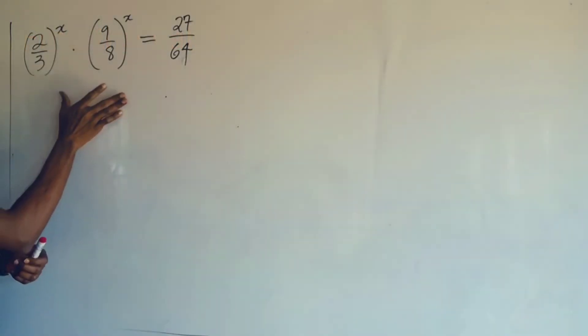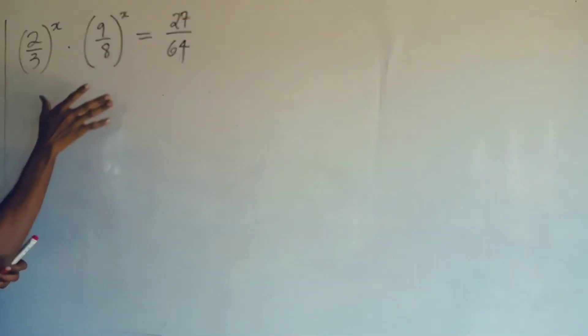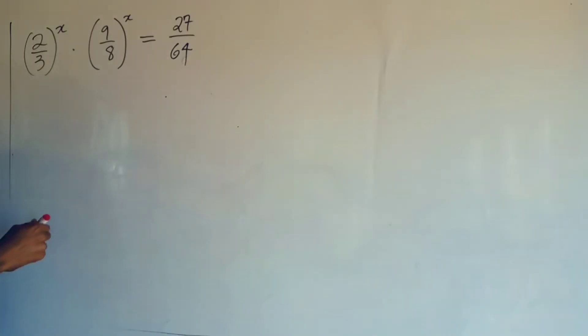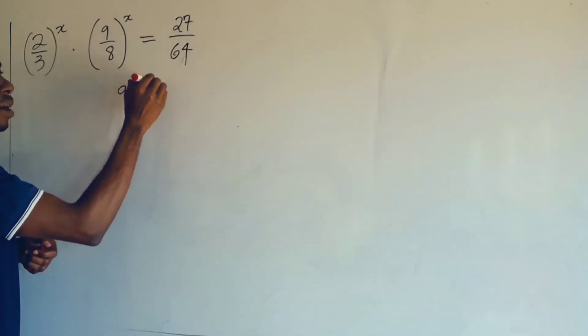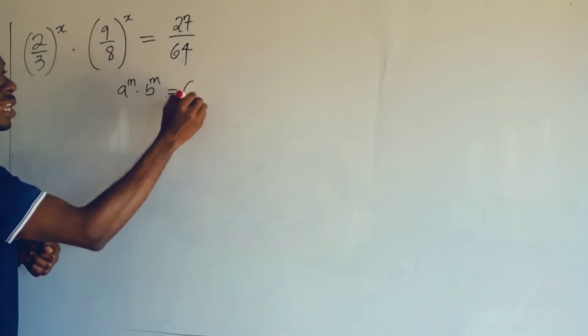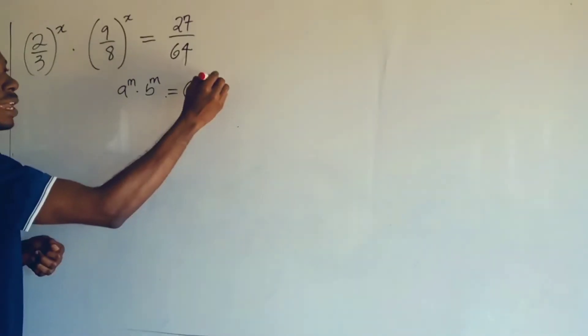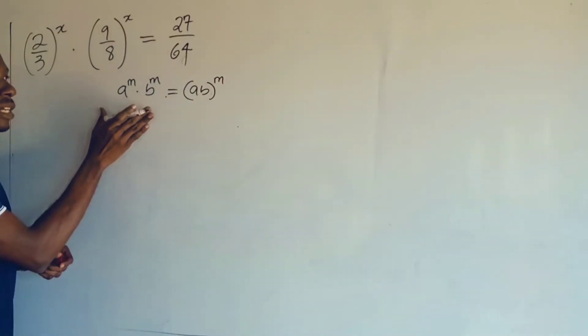Okay viewers, this question is very simple and I'll show you the easy trick to solve this problem. Now the first thing I want you to recall is one of the laws of indices that says if I have a^n times b^n, it will become (ab)^n.